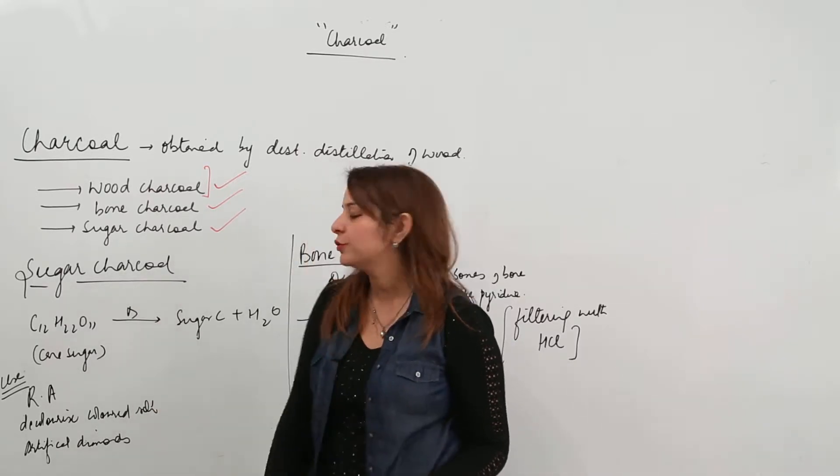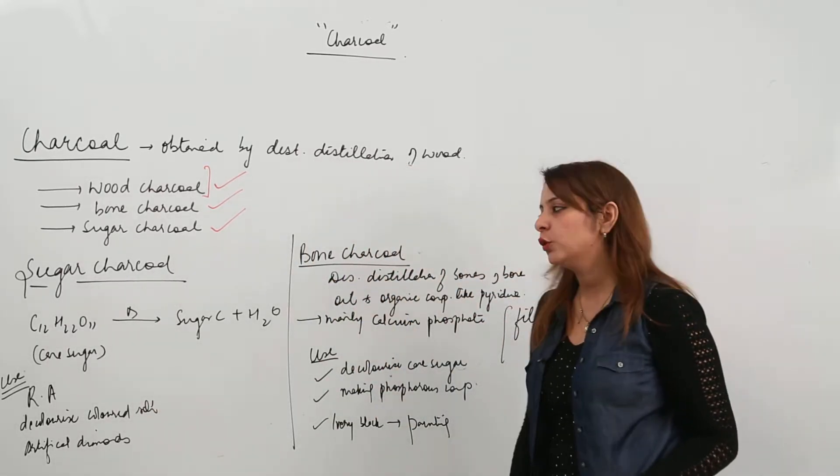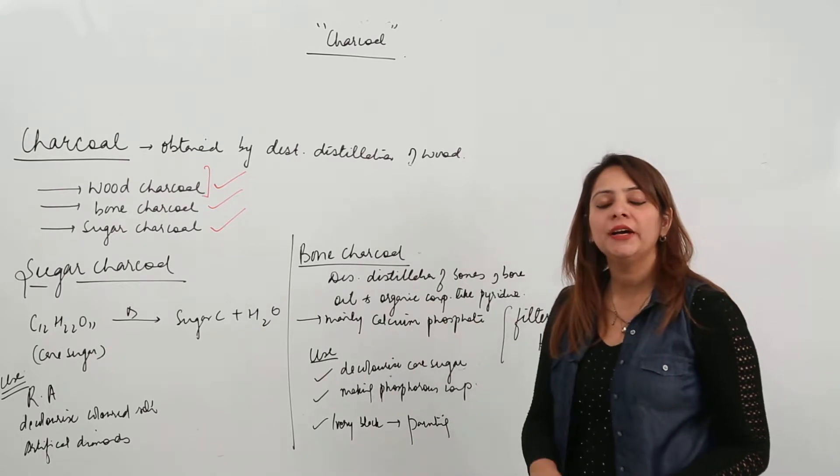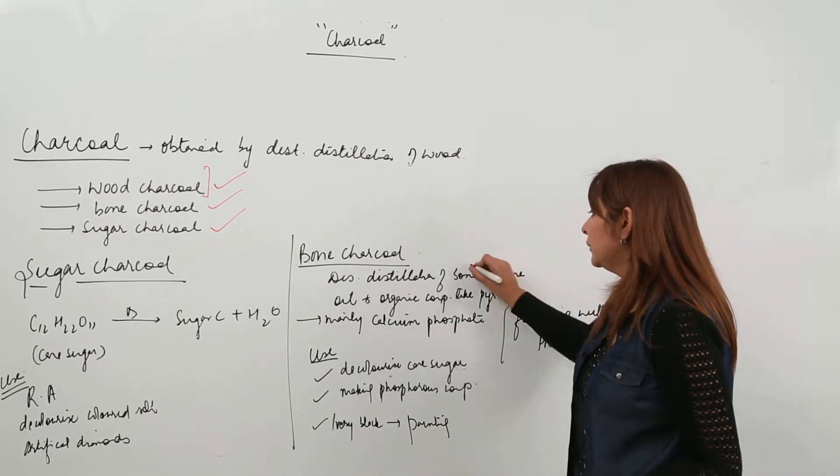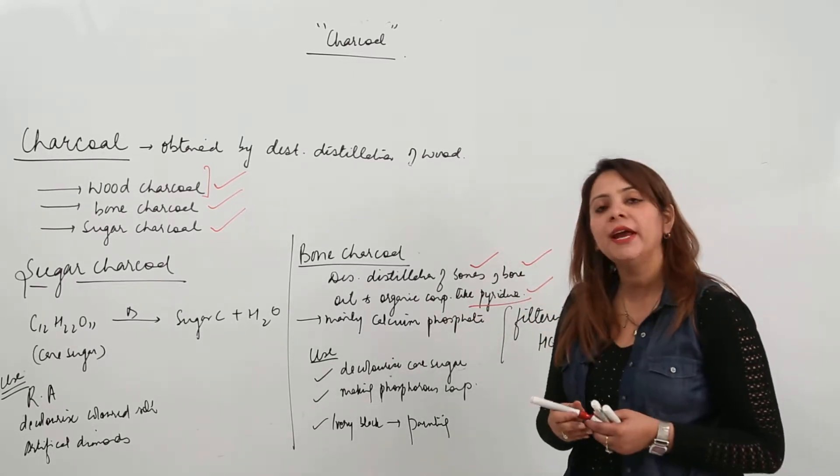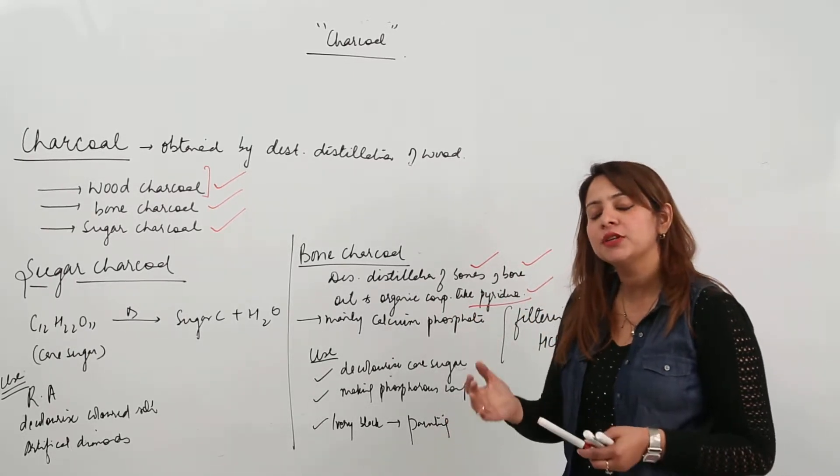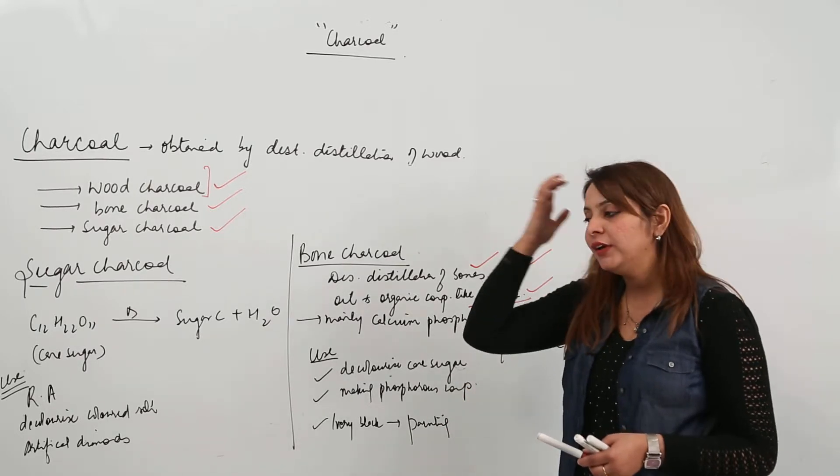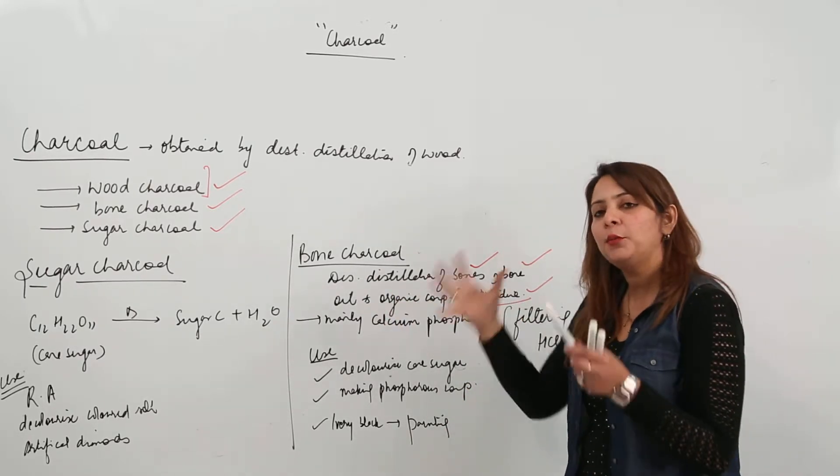This is all about the sugar charcoal you should know. Next is the bone charcoal. It is obtained when you heat in absence of air the bones, the bone oil, and organic compounds like pyridine. So again, you need to carry out the destructive distillation, the same thing, heating like we heated coal in absence of air. The same apparatus is used here.